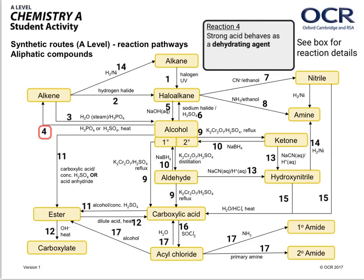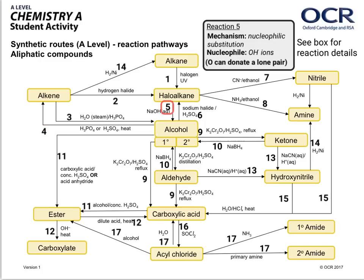The strong acid behaves as a dehydrating agent. It's also important to remember that HCl wouldn't be used because then reaction two would occur — you've got a hydrogen halide and you wouldn't be able to stop the reaction at an alkene. The acid must also be concentrated, so your phosphoric or sulfuric acid must be concentrated for this one.